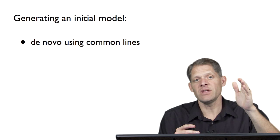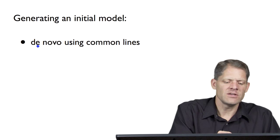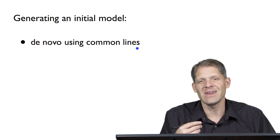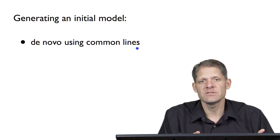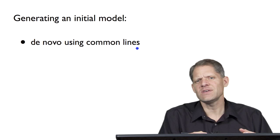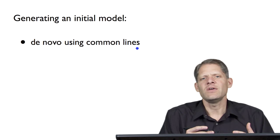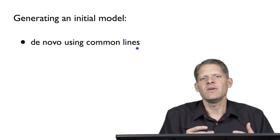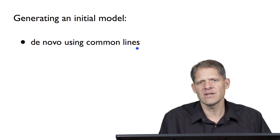The procedure of finding common lines between the transforms of different class averages is what I'm calling the de novo using common lines method of generating an initial model. It comes straight from the first set of class averages, and in that sense it's unbiased because it comes right from the experimental data. However, in many single particle projects the initial class averages are so noisy that the first generation of the initial model makes it very difficult to determine the common lines precisely, and so the initial model has significant errors.